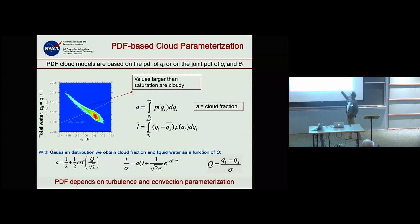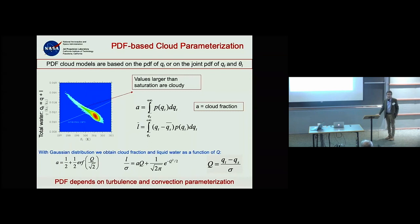If you assume a Gaussian PDF, you simplify the entire process and end up with very simple expressions for cloud cover and liquid water. These are functions of the variable Q — basically the mean total water minus mean saturation, divided by the variance of the distribution.